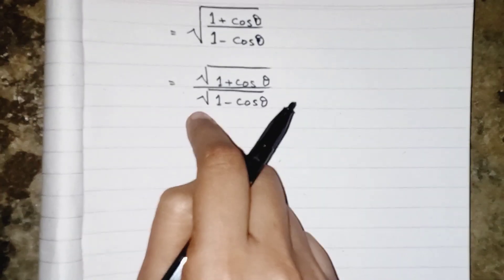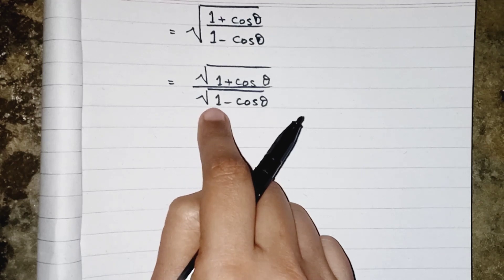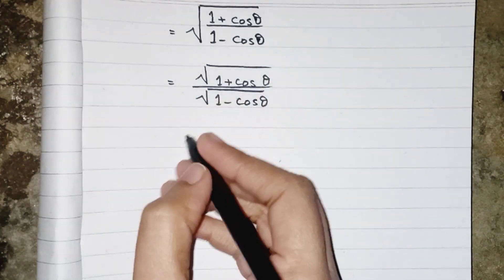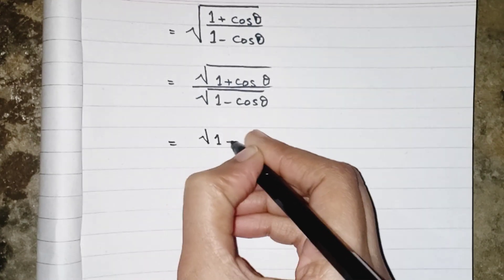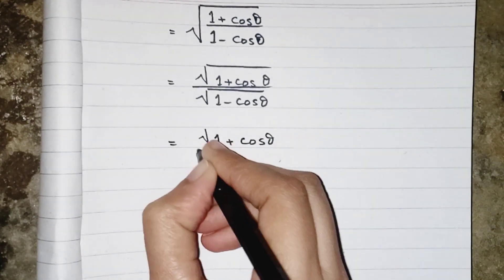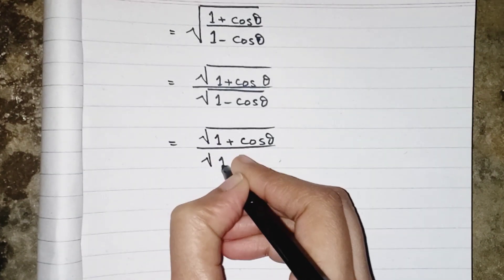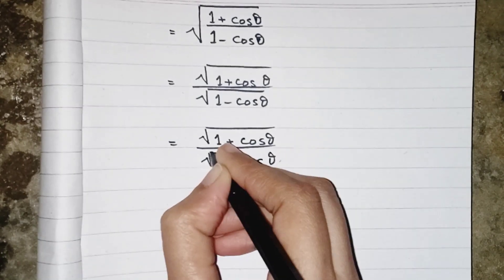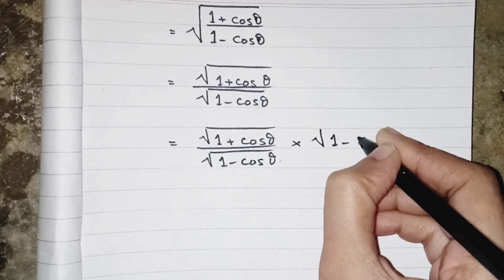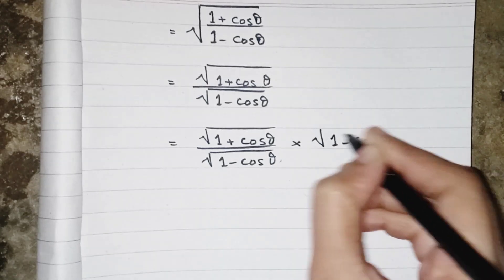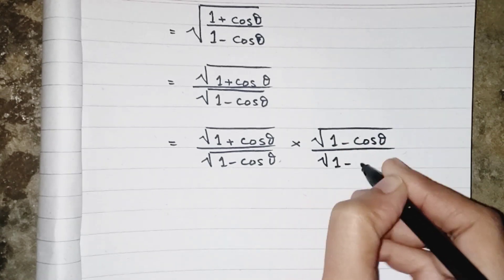The basic rule is: whenever we have an under root in the denominator, we have to rationalize it by multiplying and dividing by the denominator. So we multiply by (1 - cosθ).